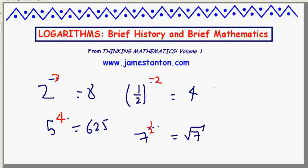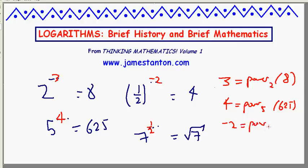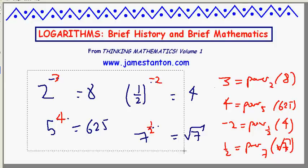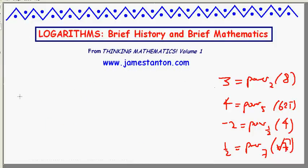Maybe another way of writing these things is as follows. 2 to the 3 is 8. 3 is the power of 2 that gives the answer 8. And 4 is the power of 5 that gives the answer 625. And negative 2 is the power of a half that gives the answer 4. And a half is the power of 7 that gives the answer root 7. That's not hard.